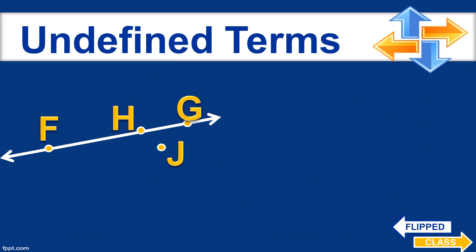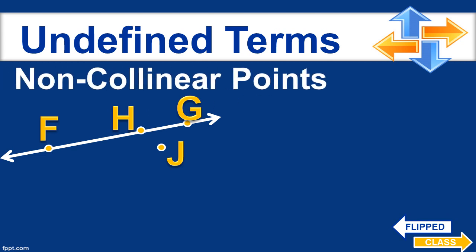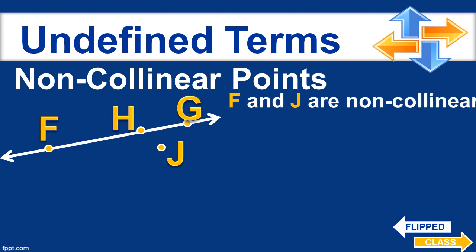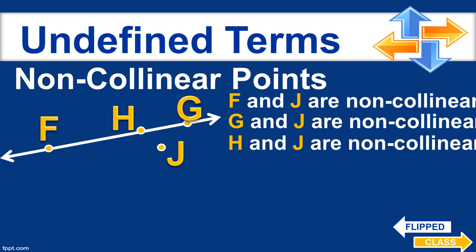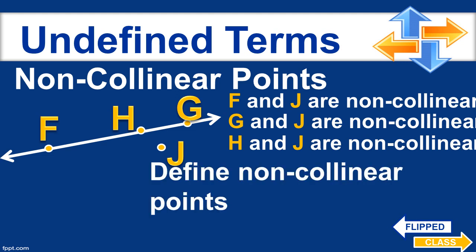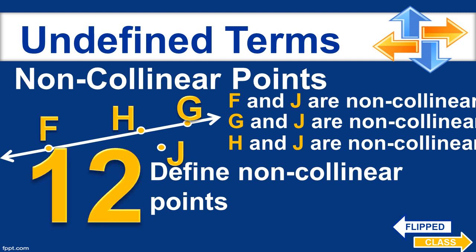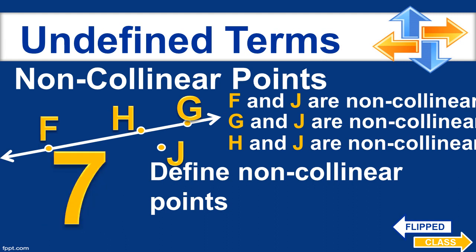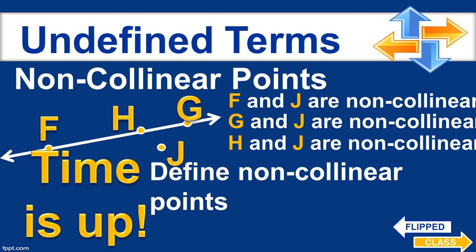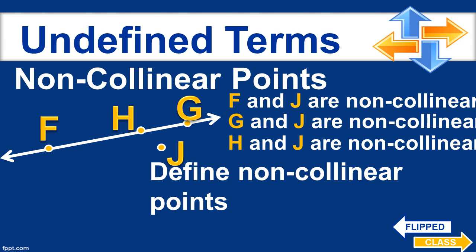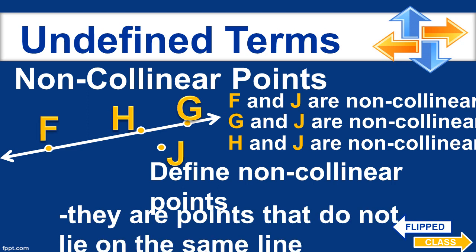Aside from collinear points, we can also describe non-collinear points. In the given figure, points F and J are non-collinear, G and J are non-collinear, and H and J are also non-collinear. Non-collinear points are points that do not lie on the same line. Look at J — it's not on the same line as F, H, and G.